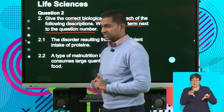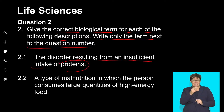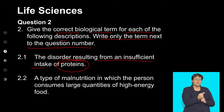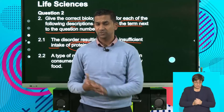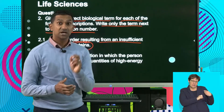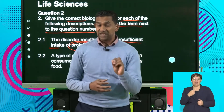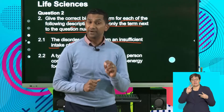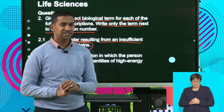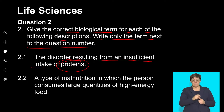2.1: The disorder resulting from insufficient intake of proteins. During our lesson on nutritional disorders, we mentioned two disorders resulting from insufficient carbohydrates and proteins. The disorder we referred to as a result of protein deficiency is kwashiorkor — a disorder where the diet is lacking in proteins. We also know that another disorder called marasmus occurs when individuals have a diet lacking in carbohydrates. So the answer for 2.1 is kwashiorkor.